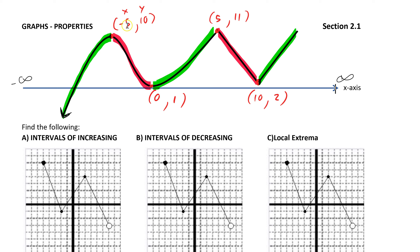Our graph increases, then decreases, then increases, then decreases, then increases. The values — negative 5, 0, 5, and 10 — are telling us when the graph will change. It increases to a maximum of 10, then back down to a minimum of 1, then up to a maximum of 11, then back down to a minimum of 2, and then off to wherever it goes.